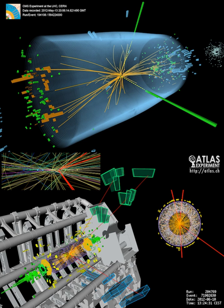Its existence was confirmed by the ATLAS and CMS collaborations based on collisions in the LHC at CERN. On December 10, 2013, two of the physicists, Peter Higgs and François Englert, were awarded the Nobel Prize in Physics for their theoretical predictions.